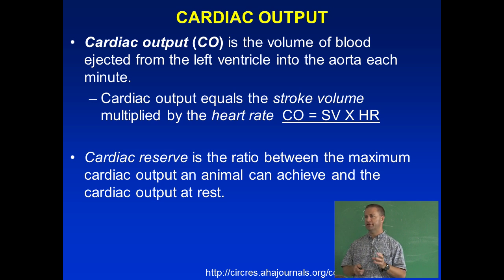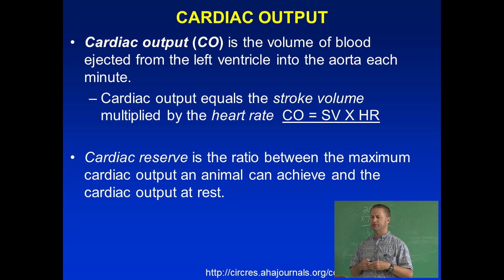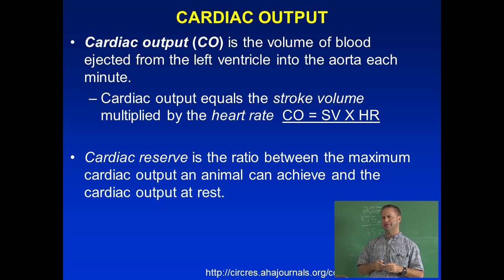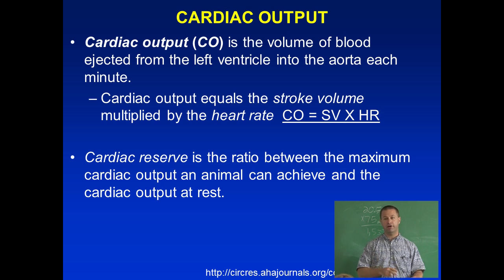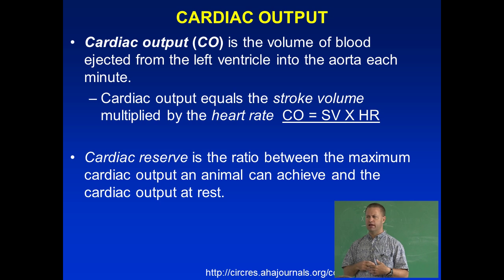It's hard to measure stroke volume. There's a reference from the 1960s where researchers used some kind of tracer on a bunch of mongrel dogs to get an estimate. Stroke volume can vary between 2 mils for little bitty breeds all the way up to 30 mils for larger breeds. For humans it's about 70 mils.